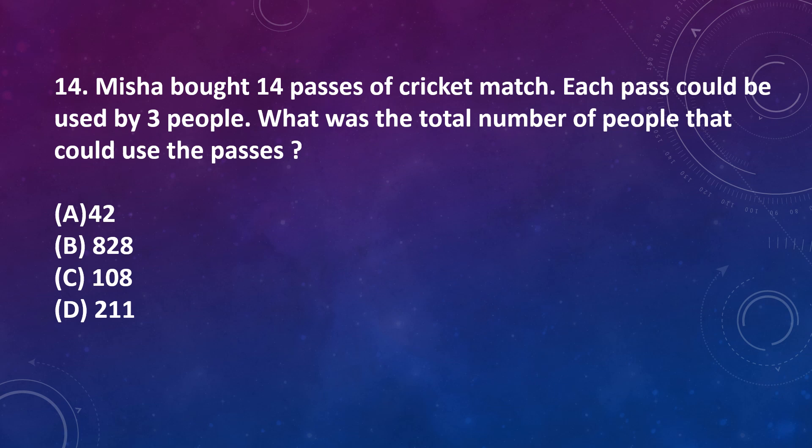Question number 14: Misha bought 14 passes of cricket match. Each pass could be used by 3 people. What was the total number of people that could use the passes? Option A: 42, Option B: 828, Option C: 108, Option D: 211. Misha bought 14 passes and each pass used by 3 people. That means total people who can use these passes, 14 multiplied by 3 is 42. So correct answer is option A.